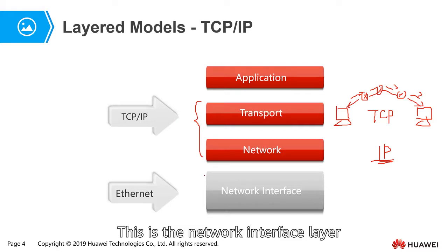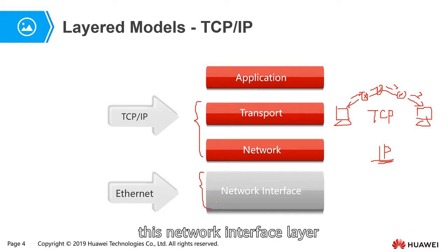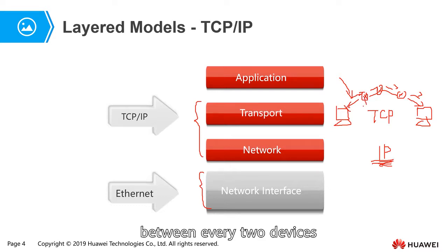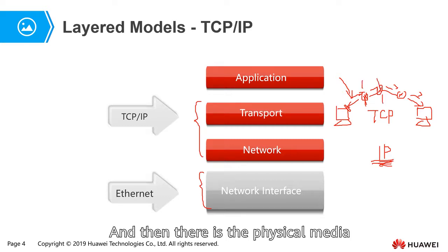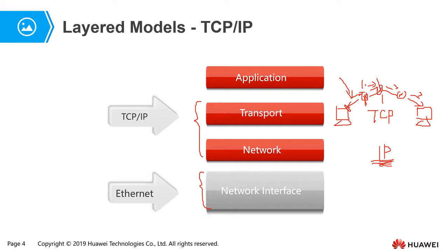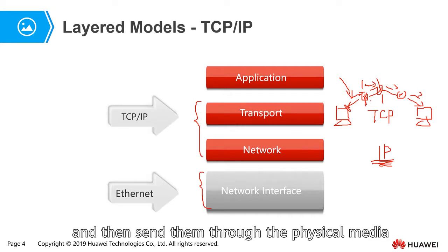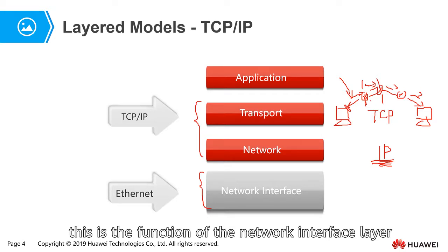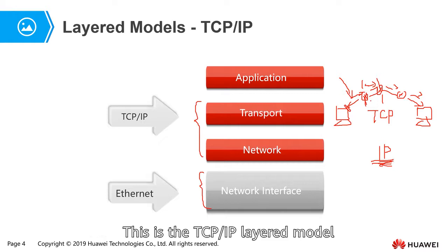The Ethernet sits at the network interface layer. This network interface layer deals with how the IP protocol uses the physical media — between each two devices, from the host to the router and between routers. It handles how to modulate the signals and send them on the physical media to reach the next hop. This is the function of the network interface layer and the TCP/IP layer model.